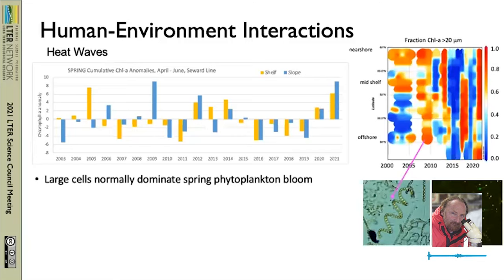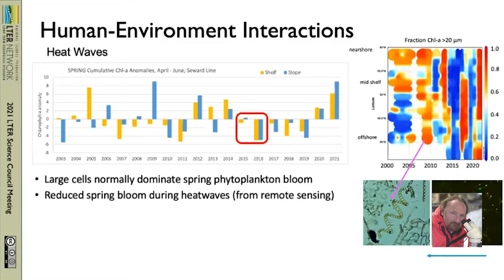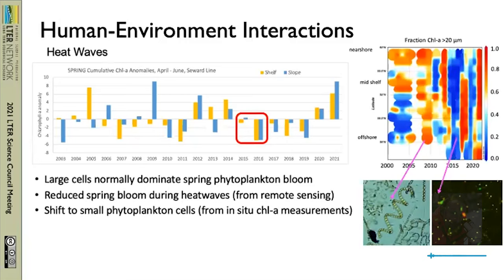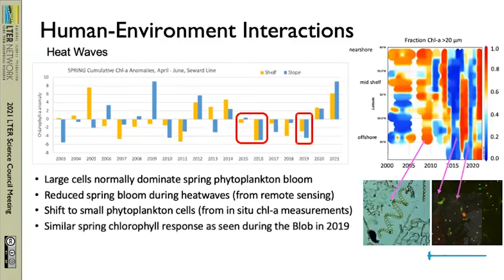This is a time series of satellite data on the top, and a time series of large-cell phytoplankton on the upper right. In a normal spring bloom period, the system is dominated by large cells. In the marine heat wave of 2015–16, we see a real shift to reduced magnitude of chlorophyll from satellites, as well as a shift to small cells during marine heat waves. In the spring of 2019, we had a mini heat wave that looked very much like what we had started to piece together for 2015–16.